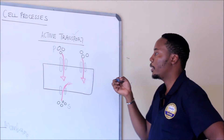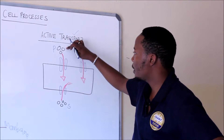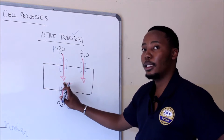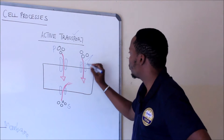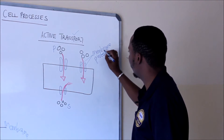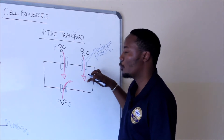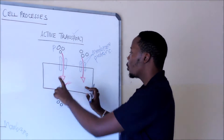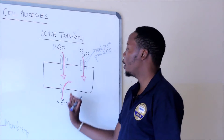One thing to note about active transport is that it is an energy-demanding process. If you look at the illustration, these molecules are moving against the concentration gradient. There are some structures in the cell called membrane proteins. These membrane proteins are responsible for taking a molecule and pushing it into the cell, or taking a molecule and pushing it out of the cell. It is energy-demanding because these proteins have to keep contracting and relaxing to push the molecule.